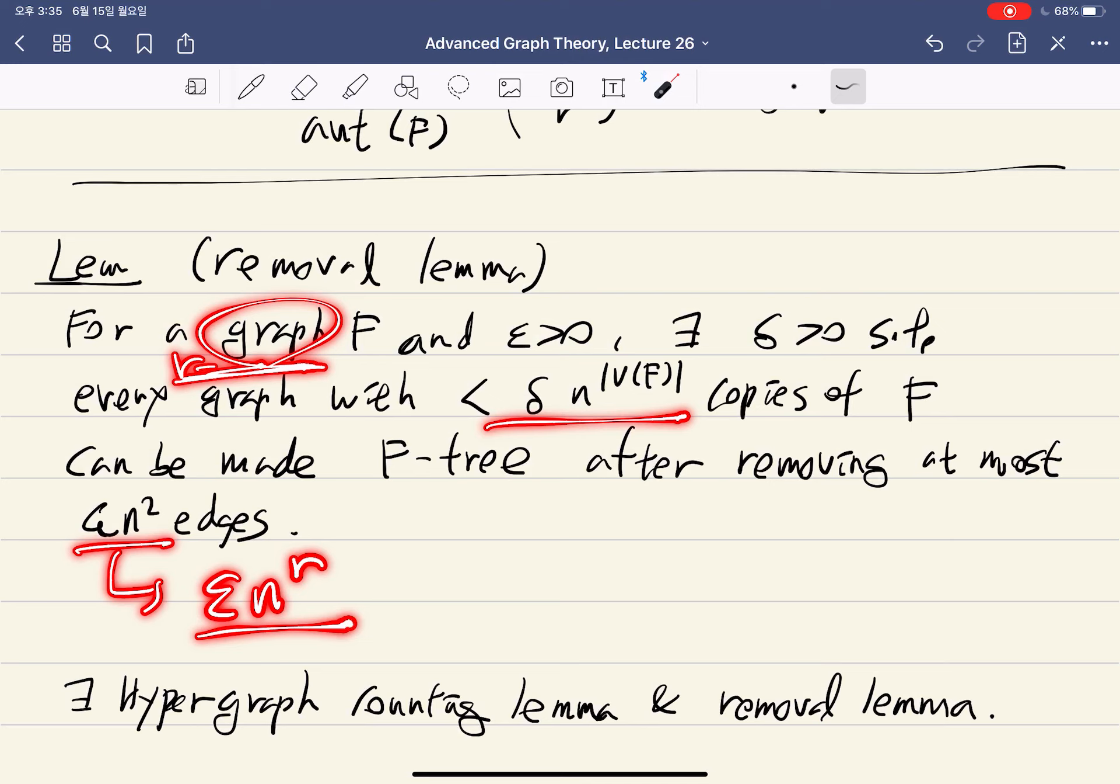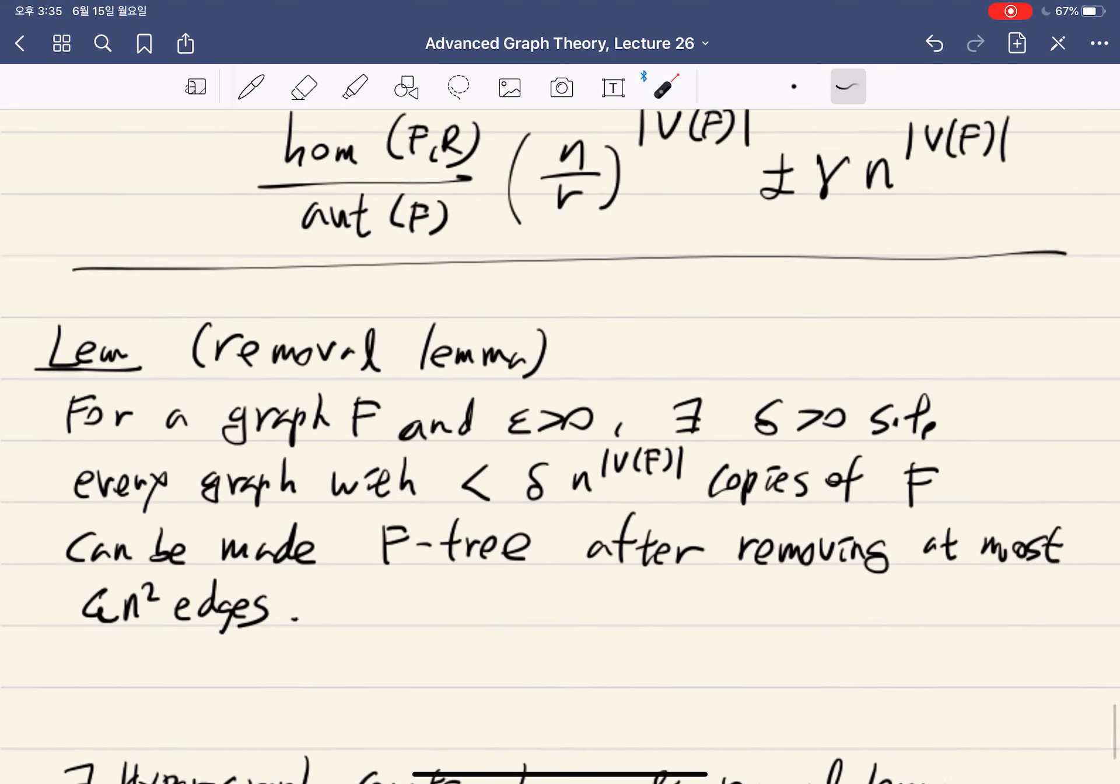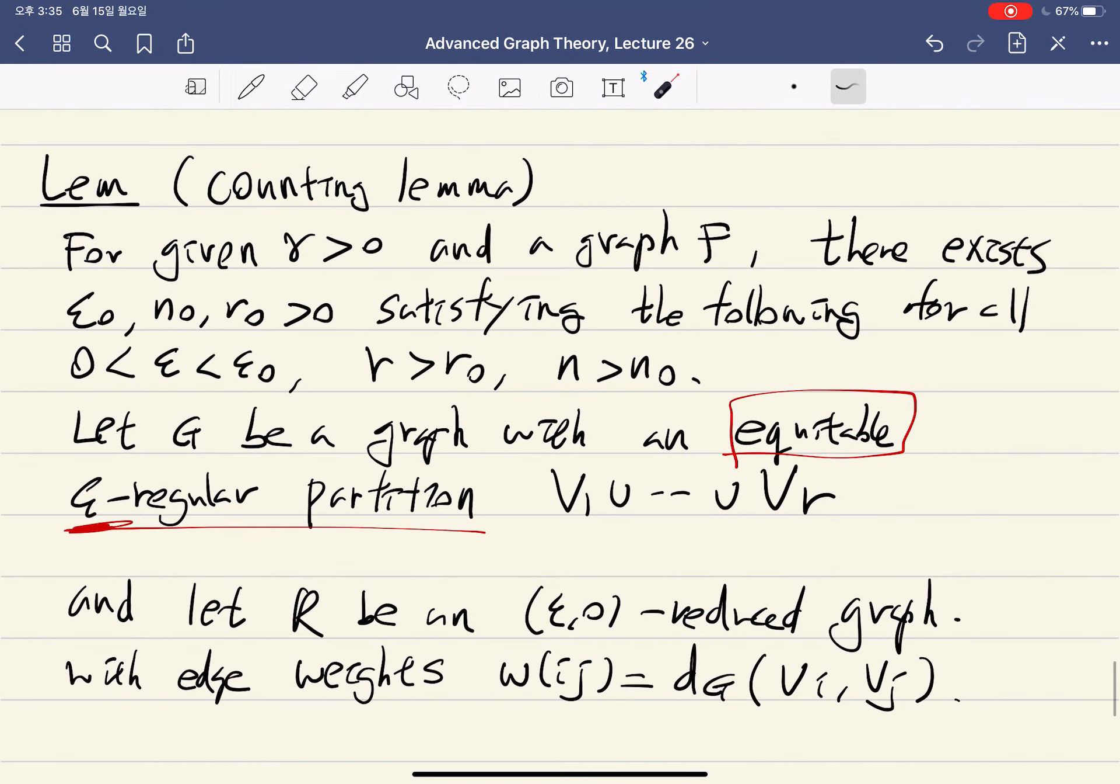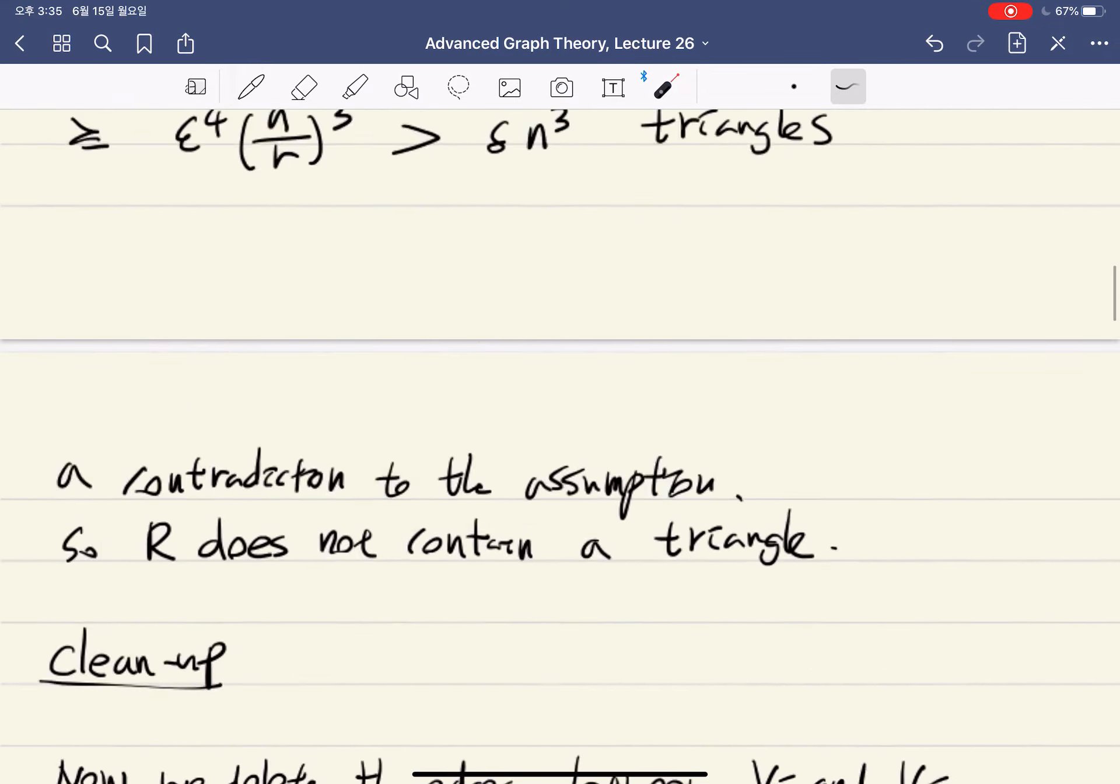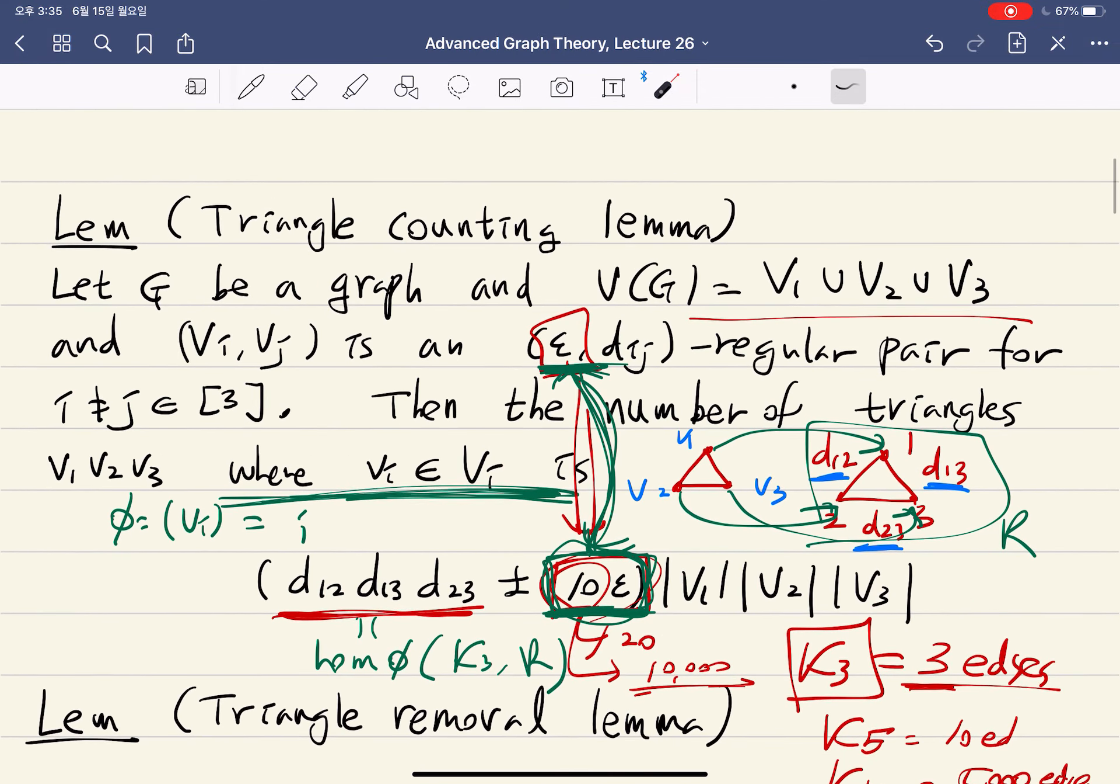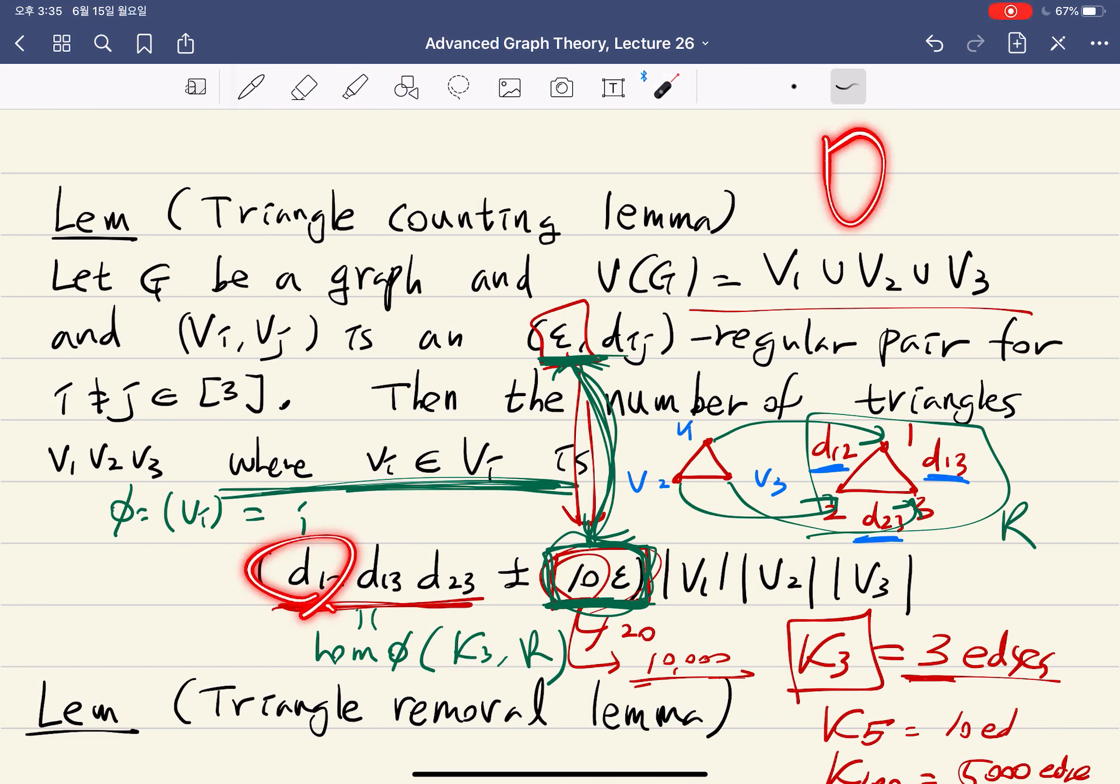That's roughly the statement of hypergraph removal lemma. But the counting lemma is a bit more complicated because here you consider the density between two sets. For three-uniform hypergraph, how do you define this density? Is it density between two sets or density between three sets?